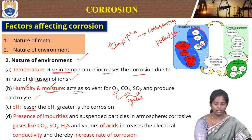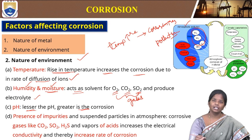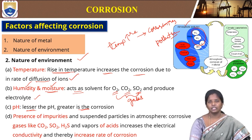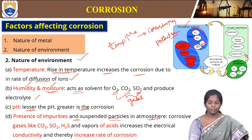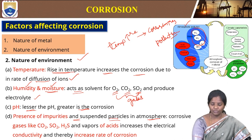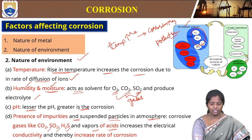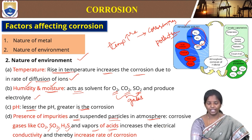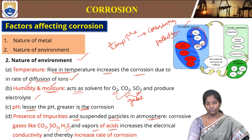Then pH — the lesser the pH, the greater will be corrosion, because at less pH it acts as an acidic medium. In acidic environment, the corrosion will increase as the rate of diffusion of ions also increases in acid. Then presence of impurities and suspended particles in the atmosphere — these impurities like corrosive gases such as carbon dioxide, sulphur dioxide, and hydrogen sulphide increase the electrical conductivity and thereby increase the rate of corrosion.